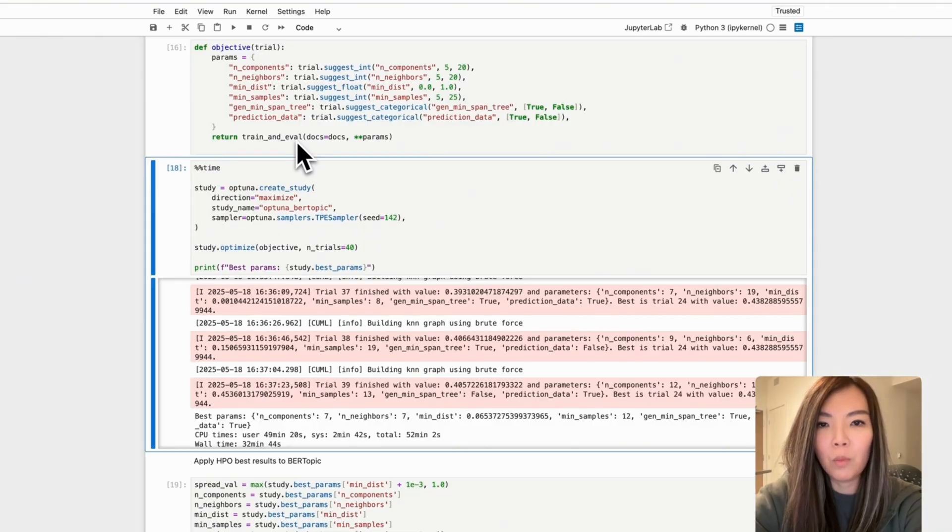Then, we use a study with optuna.create_study. We specify that we want to maximize the score and give the study a name, in this case, optuna_BERTopic. We use TPE sampler with a fixed seed for reproducibility. Finally, we launch the optimization process with study.optimize, running 40 trials in total. Each trial evaluates a unique combination of parameters, and Optuna automatically tracks the best configurations found.